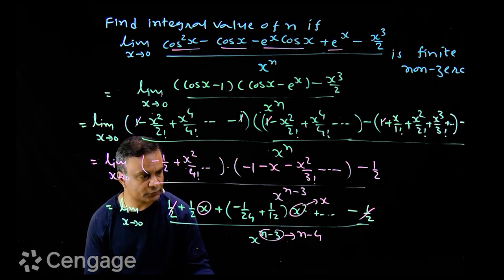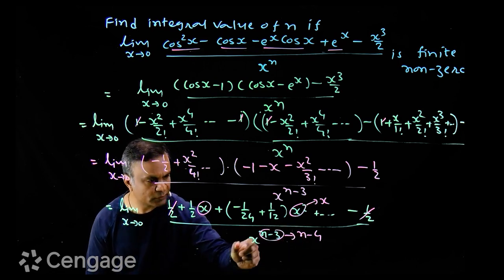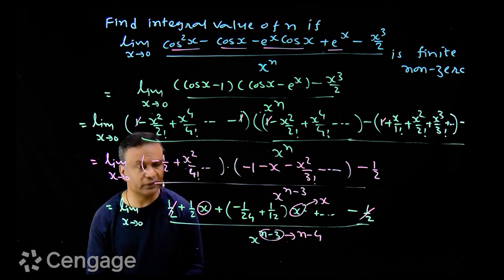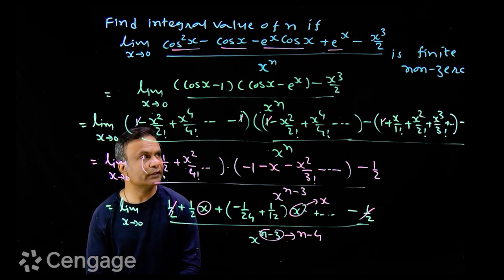If n minus 4 is greater than zero, this value tends to zero. If n minus 4 is positive, what is positive power of zero? Zero. At that time, the limiting value will be infinity. But we want limit to be finite.